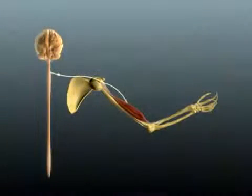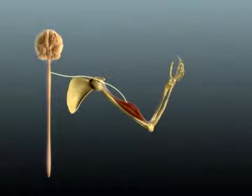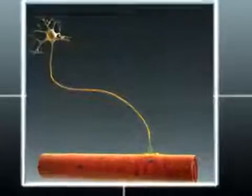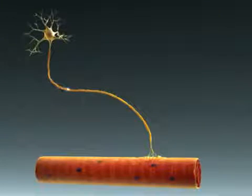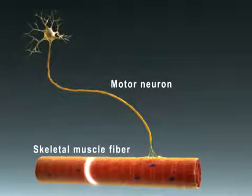Nerve impulses, also known as action potentials, travel from the brain or spinal cord to trigger the contraction of skeletal muscles. An action potential propagates down a motor neuron to a skeletal muscle fiber.